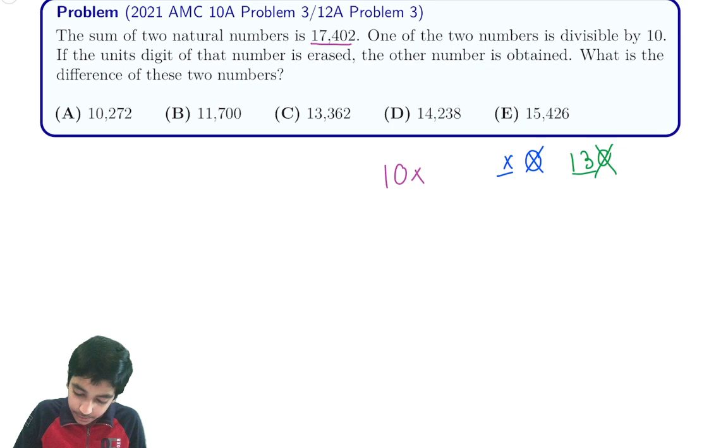So basically when you erase the unit digit we get the number x, meaning that the sum of the two numbers is 10x plus x which is 11x which equals 17,402.